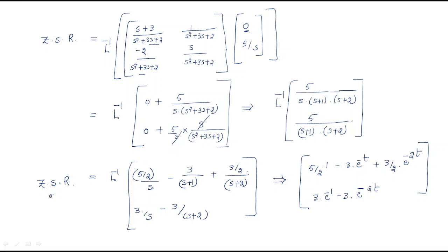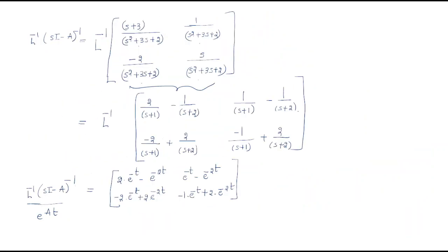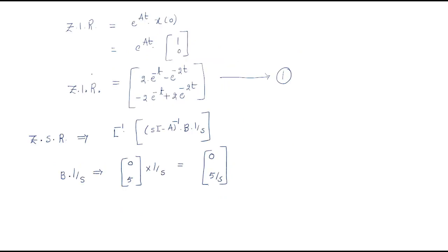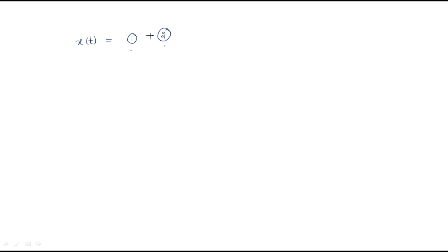Up to now we have been finding x(t), the state vector. The zero state response has been computed. The final state vector x(t) is a combination: zero input response plus zero state response (equation 1 plus equation 2).